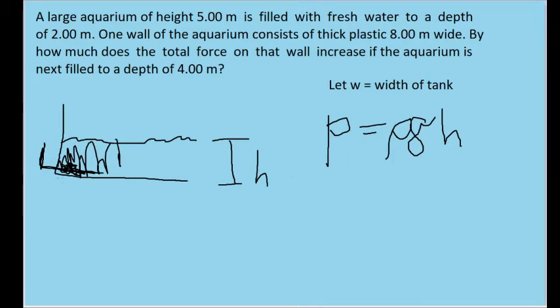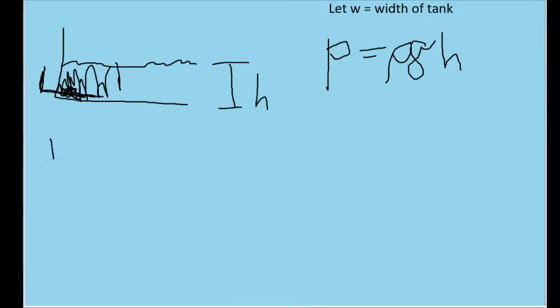Meaning that the total pressure acting on the wall is going to be equal to one half times the pressure at the top plus the pressure at the bottom.